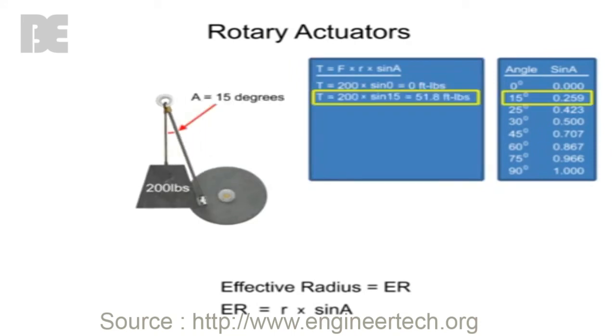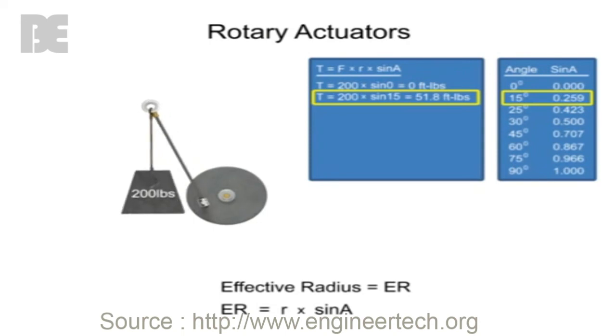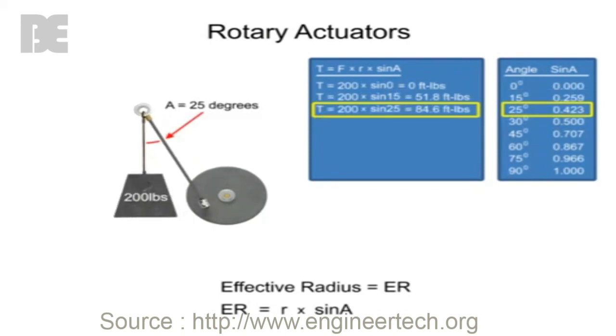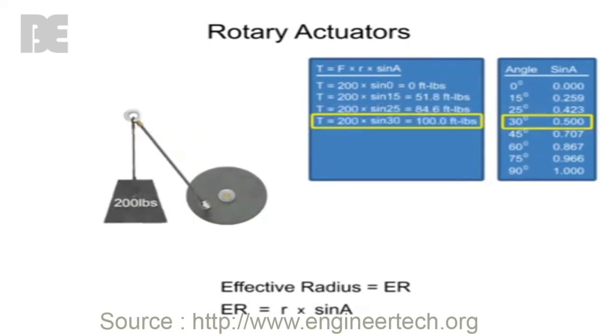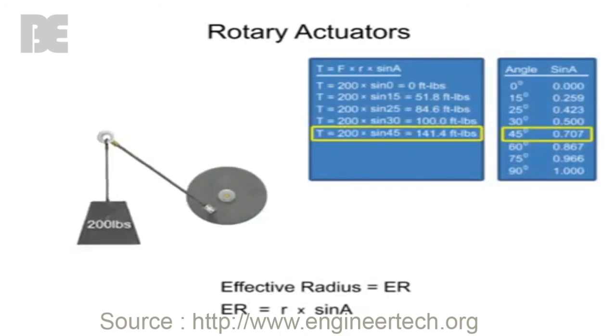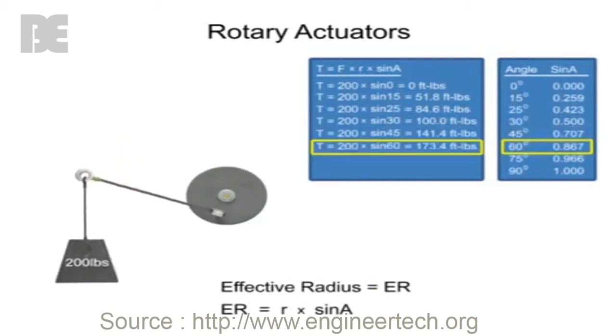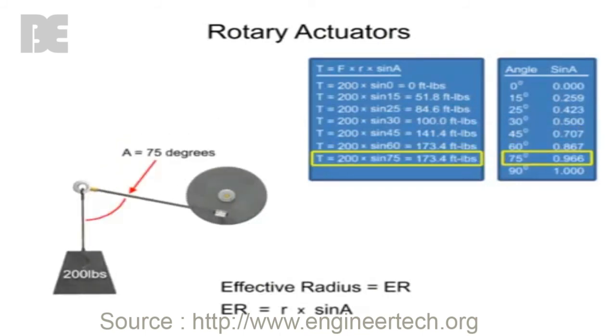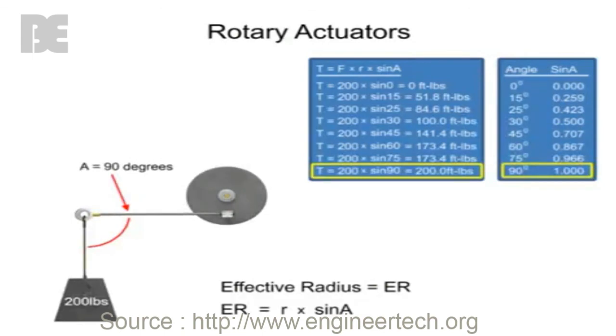As the angle increases, the sine also increases, which will increase the torque. When the lever arm is at right angles to the force of the weight, the angle is equal to 90 degrees. The sine of 90 degrees is equal to 1. It is at this angle that the torque is at its maximum value for the system.